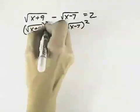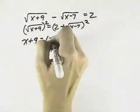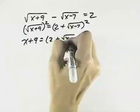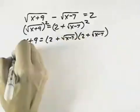Now when I square both sides, I've eliminated one of my radicals so that I have just x plus 9 on the left. But when I multiply out the right, which is 2 plus the square root of x minus 7, times 2 plus the square root of x minus 7, I'm still going to have a radical left.